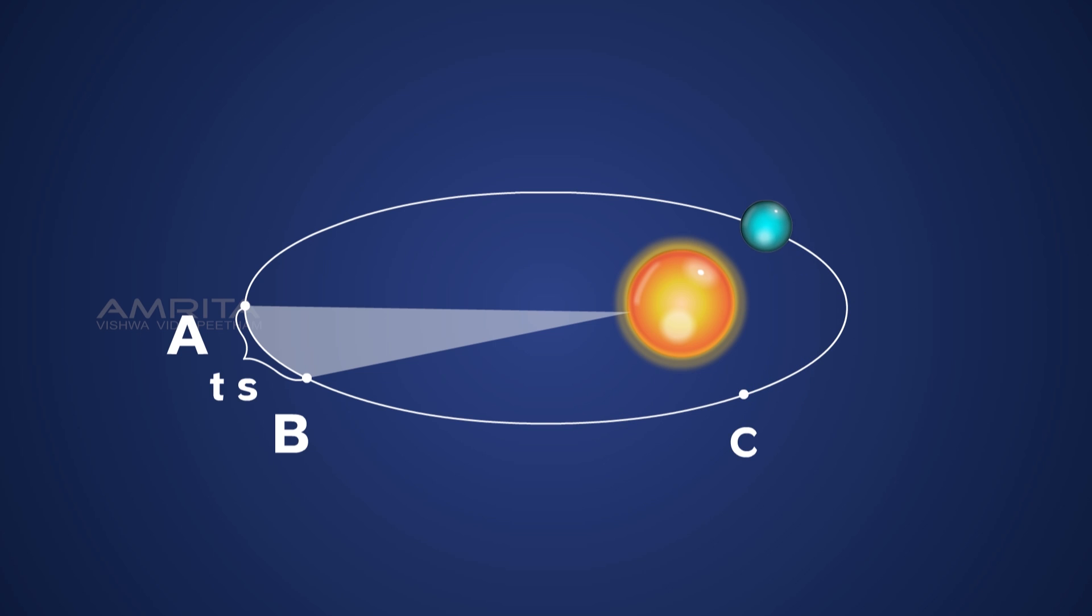Between the point C and D, the planet will cover the same area in t seconds. The area between A and B and the area between C and D is equal.